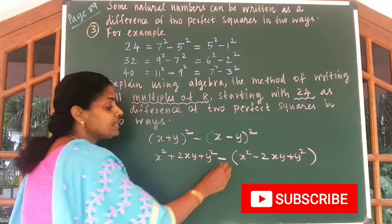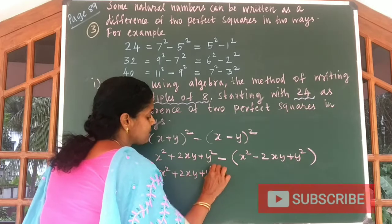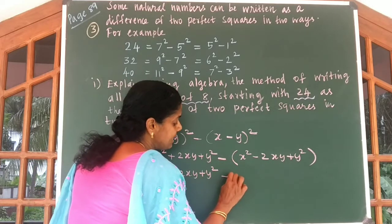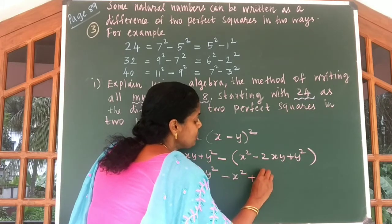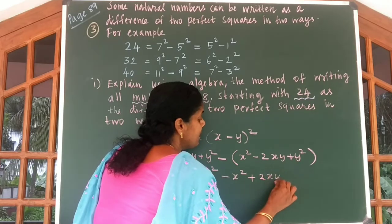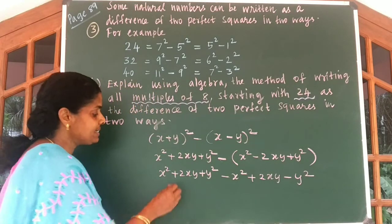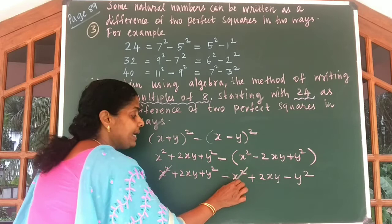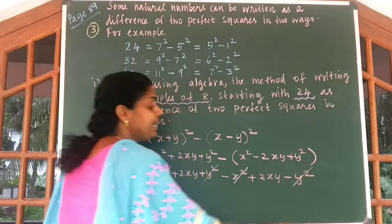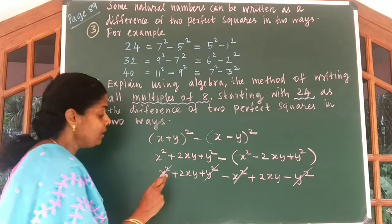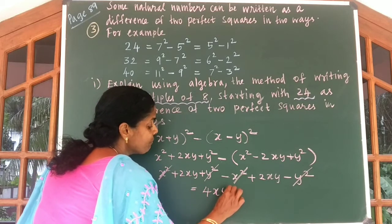Now let us remove this minus sign. Then you will get x square plus 2xy plus y square minus x square, minus of minus 2xy, plus into minus gives minus y square. You can cancel positive x square with negative x square, and positive y square with negative y square.